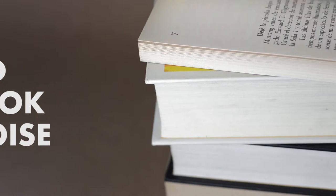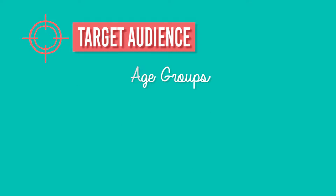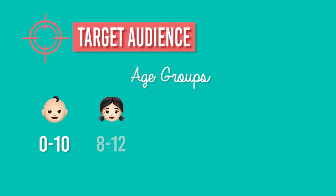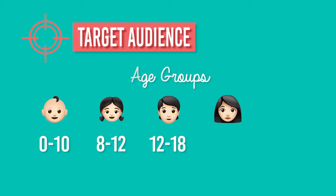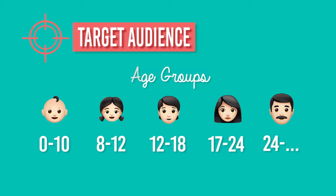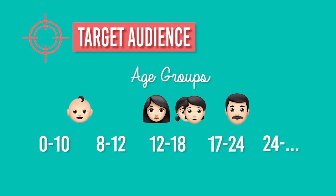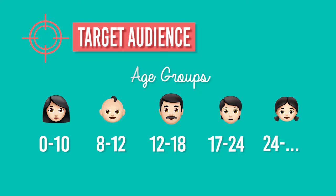Let's look at some quick definitions. Target audience refers to the age groups that books are marketed to. Children's books range from babies to age 10, middle grade books from ages 8 to 12, young adult books from ages 12 to 18, new adult books from ages 17 to 24, and books written for adults really aren't marketed to a specific age group. All the age ranges are fluid.